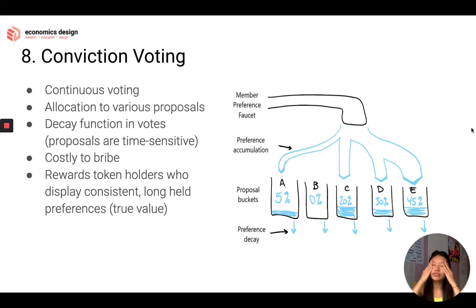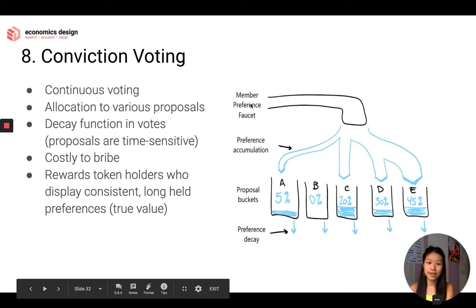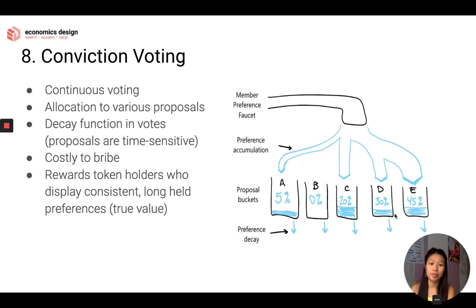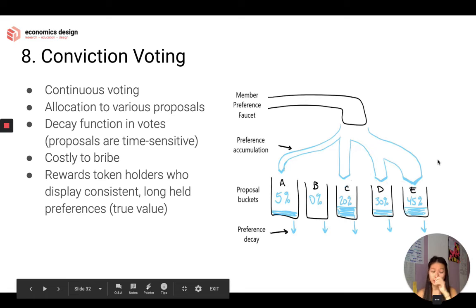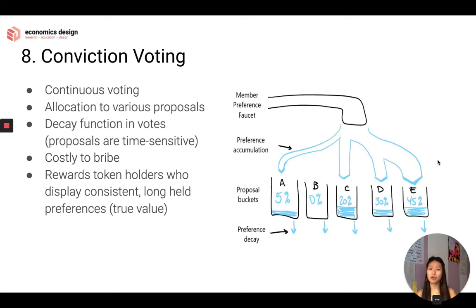The last one is Conviction Voting, which is a continuous voting mechanism. I like the model Jeff Emmett drew — it's a tap with water flowing out to different buckets, where each bucket is a proposal. The faucet represents you voting. As a voter, you can allocate 5% of your vote to Proposal A, 20% to Proposal C, 30% to Proposal D, 45% to Proposal E. Or you can direct all your tokens into just one proposal's bucket. This is about expressing intensity of preference across multiple proposals simultaneously.